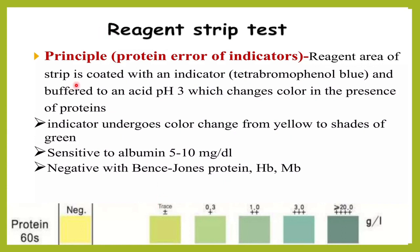The principle of the reagent strip is that its reagent area is coated with an indicator — tetrabromophenol blue — buffered to an acid pH of 3, which changes color in the presence of protein. The indicator undergoes color changes from yellow to shades of green depending upon the amount of protein present.